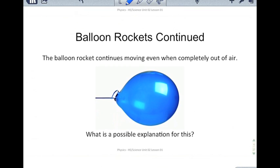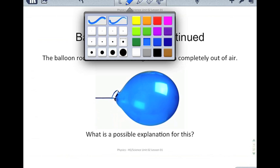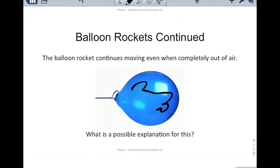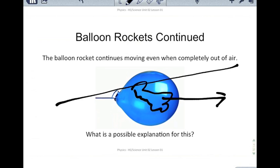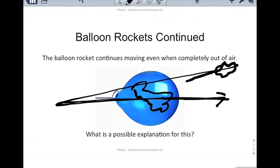The balloon rocket actually continued to move forward even when it ran out of air — when this balloon was completely deflated, it continued to move on its path for at least a brief while. There are some exceptions: if the balloon was traveling upward, it ran out of gas and fell back down. But as long as you had a straight line, the balloon would continue in the same direction. A similar explanation applies to your car — if your car runs out of gas, the engine stops, but that doesn't mean you immediately come to a stop. We have to look at it in terms of Newton's laws of motion.